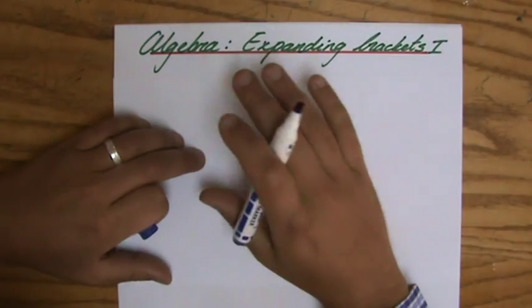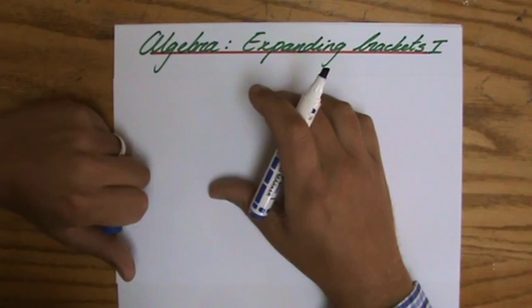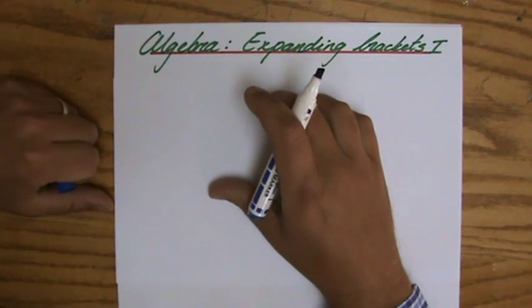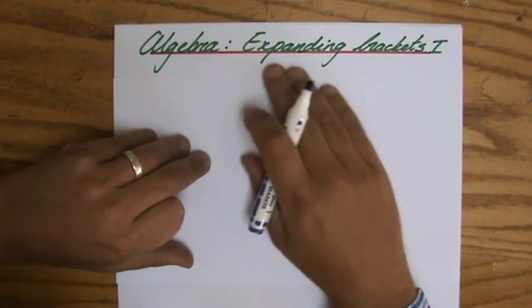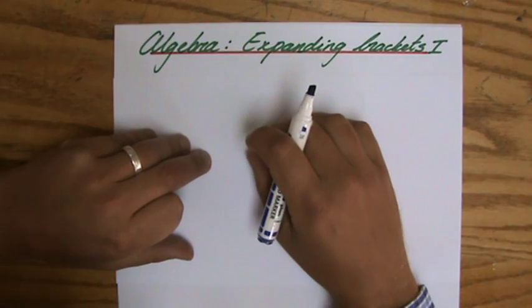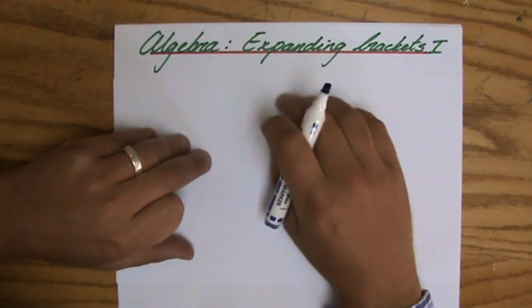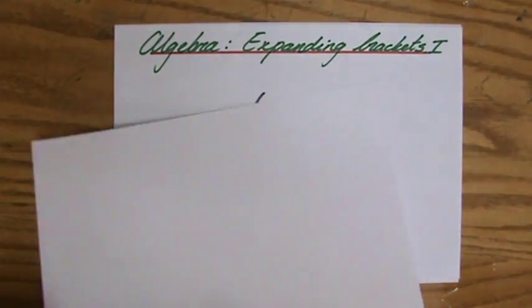Fantastic that you're here. We have spoken about some important language involving algebra. We have spoken about simplifying expressions, which is really important. And now it's time to start to talk about expanding. And that involves brackets, and I'm sure you know what brackets are.